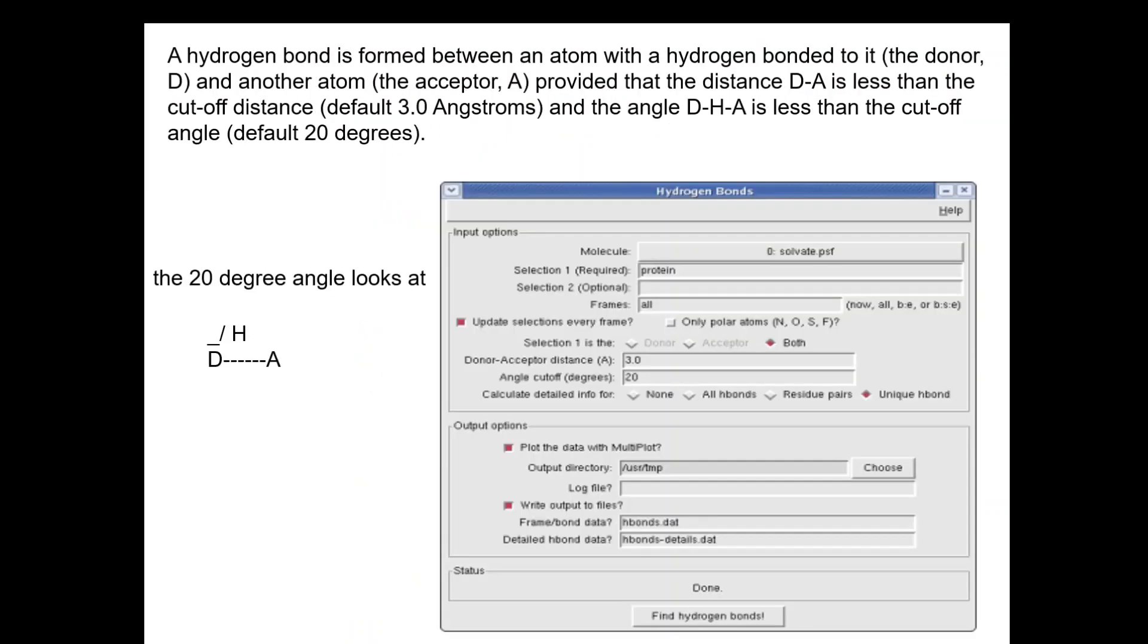Let's go to the computational side of this video, which is the VMD plugin to compute the number of hydrogen bonds. Let's see how VMD developers define the hydrogen bond. They say a hydrogen bond is formed between an atom with a hydrogen bonded to it, called the donor D, and another atom which is the acceptor A, provided that the distance D-A is less than the cutoff distance. By default it's 3 angstroms which is strong or quite moderate. And the angle D-H-A is less than the cutoff angle which is by default 20 degrees, which is quite restrictive.